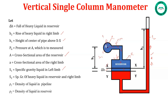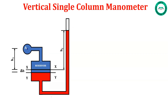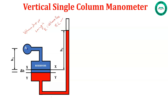The volume drop of heavy liquid in the reservoir equals the volume of rise in the right limb. The fall of heavy liquid in the reservoir causes a rise in the right limb, given by: A × delta h = a × h2. So delta h = (a × h2) / A. Now consider the datum line YY as shown. The pressure in the right limb above YY is: rho2 × g × (delta h + h2).